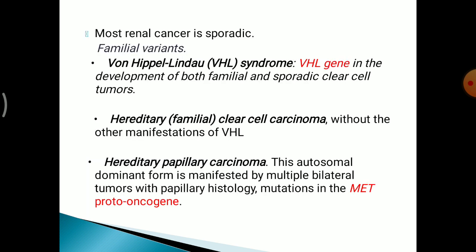Most renal cancer is sporadic, but certain familial variants are observed. Von Hippel-Lindau syndrome is one such, where the VHL gene is involved in the development of both familial and sporadic clear cell tumours. There is also hereditary familial clear cell carcinoma without other VHL manifestations, and hereditary papillary carcinoma — an autosomal dominant form with multiple bilateral tumours with papillary histology, with mutations in the MET proto-oncogene.